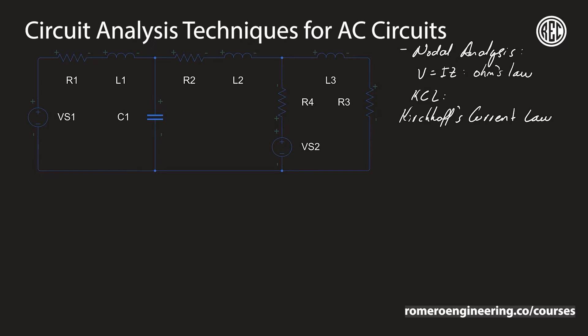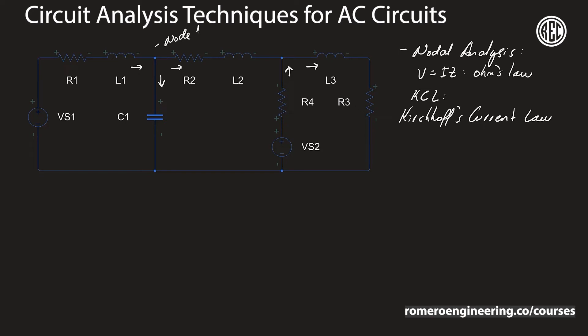Kirchhoff's current law states that the algebraic sum of the currents entering and leaving a node in a circuit must equal zero. In other words, the currents entering a node must equal the currents leaving it. Looking at this circuit, I'll define node one and node two, and at each node the algebraic sum of the currents must be equal to zero.